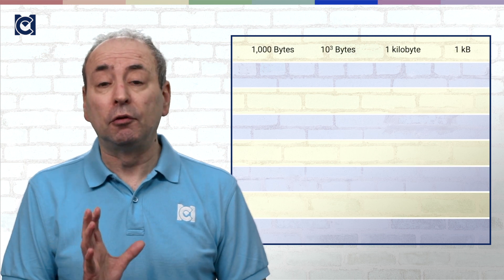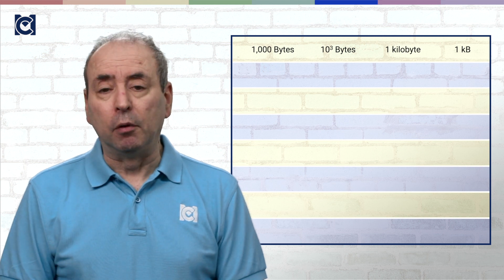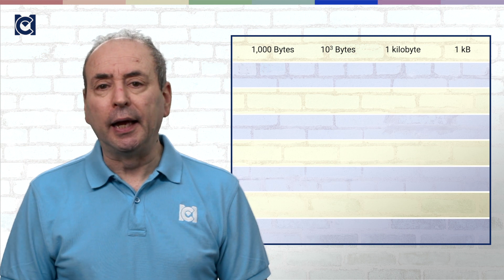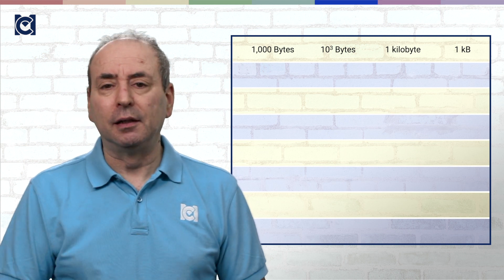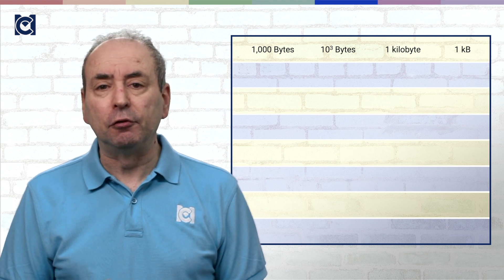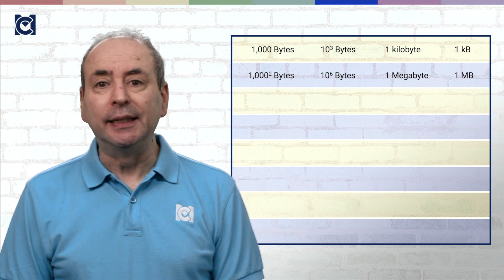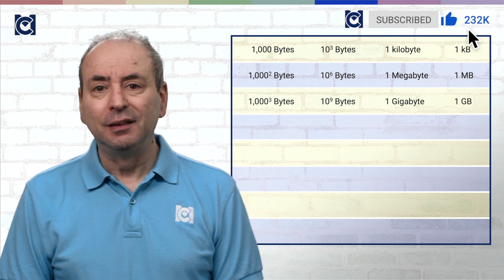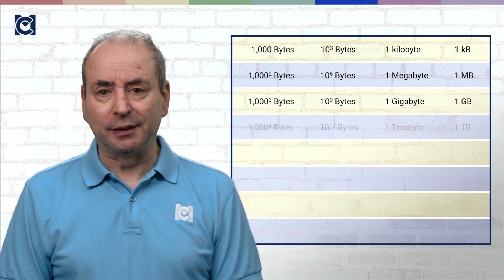Now we can combine our knowledge of scientific notation and bits and bytes. 1,000 bytes is 10 to the 3 bytes, or 1 kilobyte — written as 1 KB, with the small k standing for kilo. This notation makes it very easy to represent vast numbers. 1 megabyte is 10 to the 6 bytes, and 1 gigabyte is 10 to the 9 bytes. 1 terabyte is 10 to the 12 bytes. For consumer-level data storage, the current state of the art tends to be terabyte-scale disks — a new computer may come with a hard drive of 1, 2 or 3 terabytes.